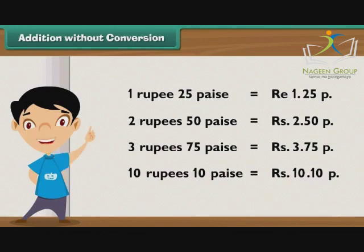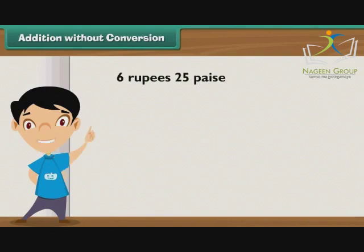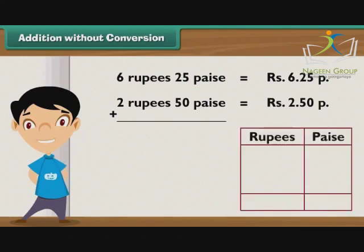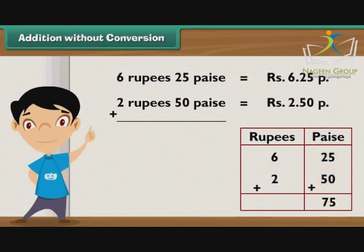Let us now perform additions without any conversions. Let's add 6 rupees 25 paise and 2 rupees 50 paise. First write 6 rupees 25 paise as Rupees 6.25 P. Just below it, write 2 rupees 50 paise as Rupees 2.50 P, in such a way that the rupee part falls in the rupee column and the paise part falls in the paise column. Step 1: Add the numbers in the paise column. 25 plus 50 is equal to 75. Write 75 in the paise column.